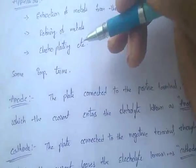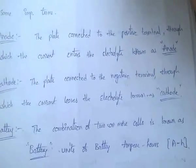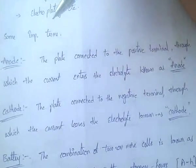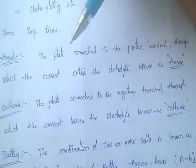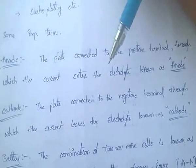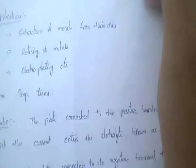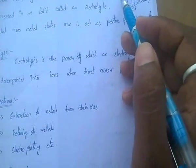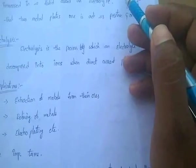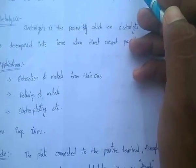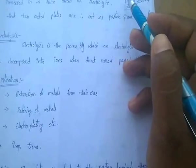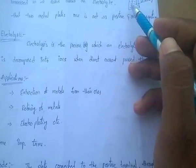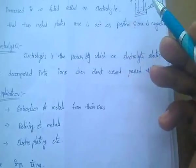Some important terms used in cells: anode and cathode. The anode is the plate which is connected to the positive terminal, through which the current enters the electrolyte. It is called the anode.